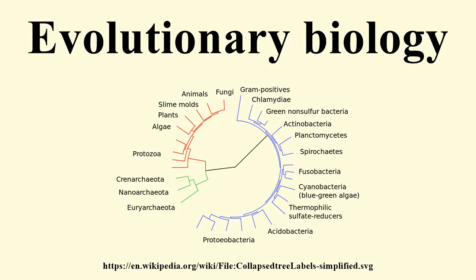Biologists ask the most straightforward evolutionary question: what happened and when? This includes fields such as paleobiology, as well as systematics and phylogenetics. The modern evolutionary synthesis was devised at a time when nobody understood the molecular basis of genes. Today, evolutionary biologists try to determine the genetic architecture of interesting evolutionary phenomena such as adaptation and speciation.